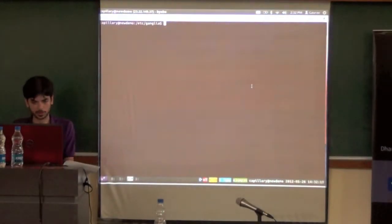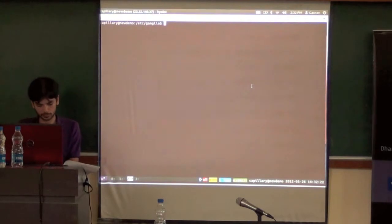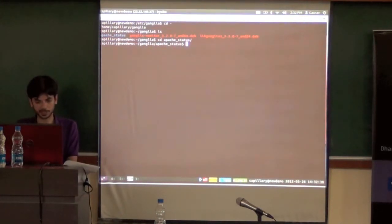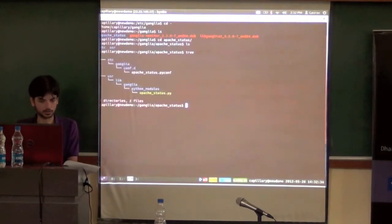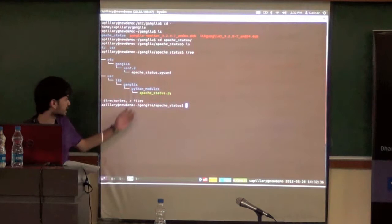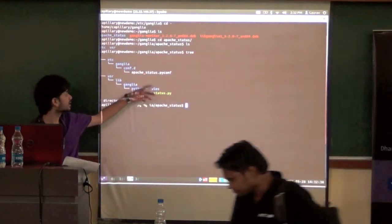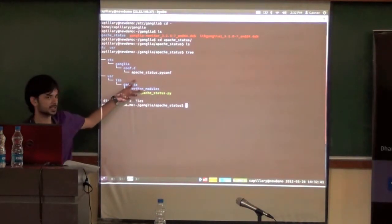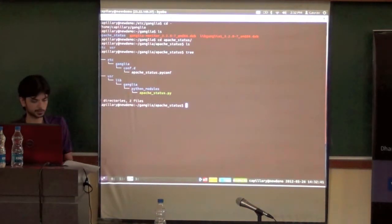Let me just configure the Apache plugin on this one and check if it's there. I have this plugin here which is a normal GMOND plugin. It has this Python file and the config file. The config file needs to go into the config folder. This module needs to go into the module folder. After that this plugin will be directly available.